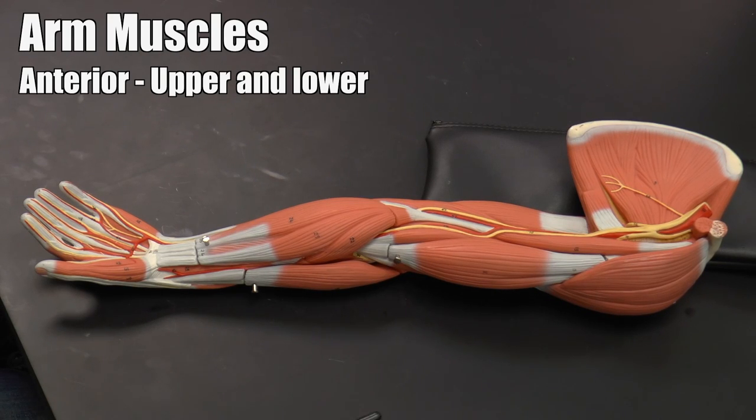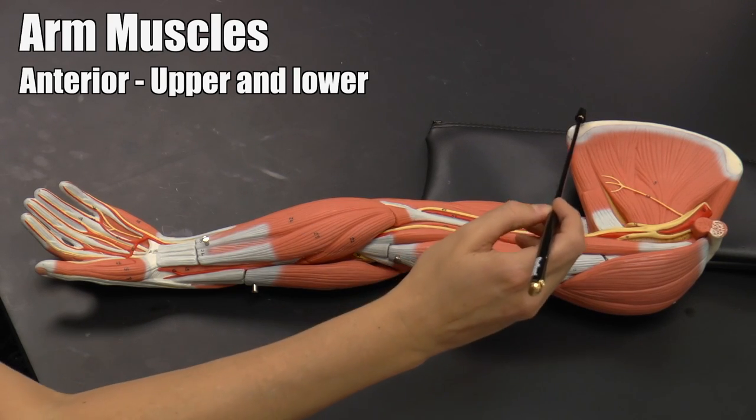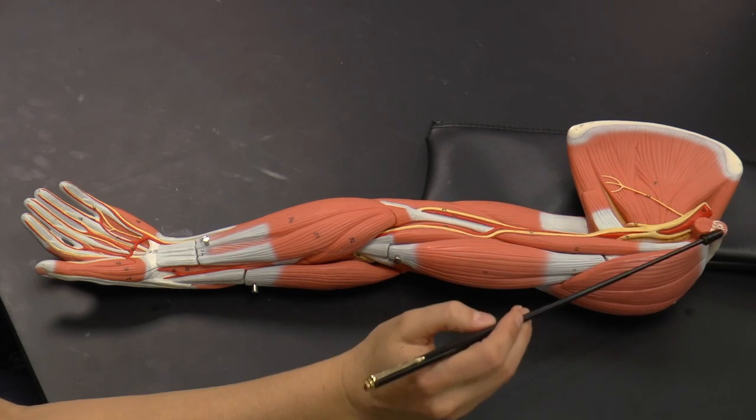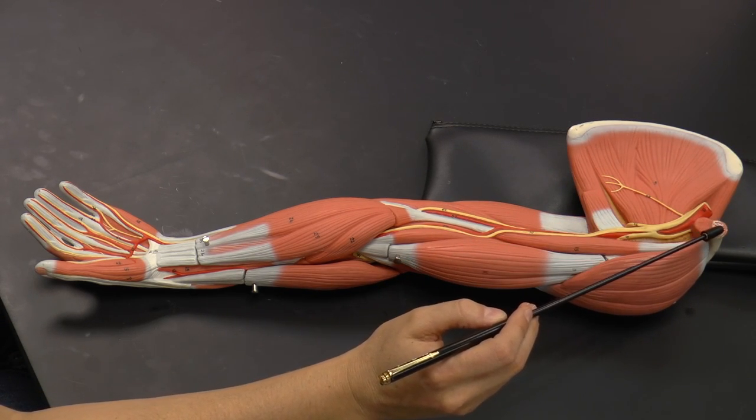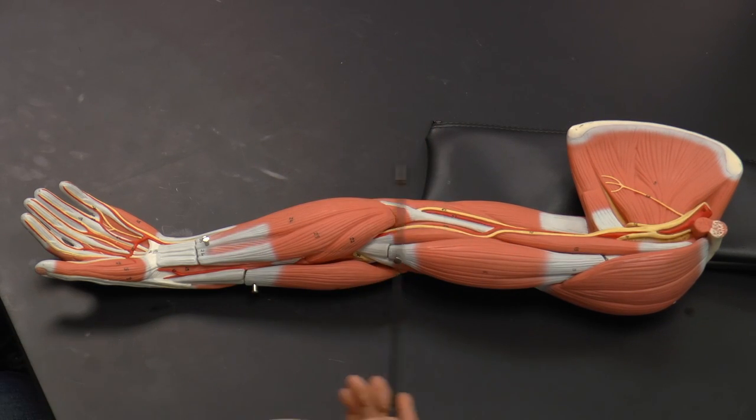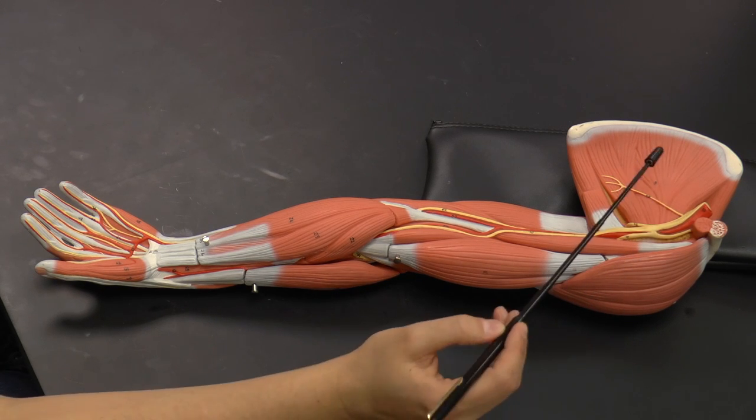Here we have an anterior view of the arm, so the front of the arm. You can see the medial edge of the scapula here, and you can actually see where the cut would be for the clavicle coming across the body. We're going to start with our anterior view of the arm and work our way down.